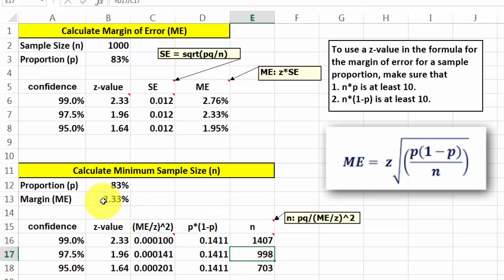So if you had a different margin of error, if you had said, no, we want a margin of error of 1.95%, then you would see that that poll must have included at least 1,425 people in the sample.